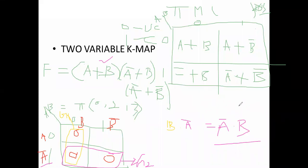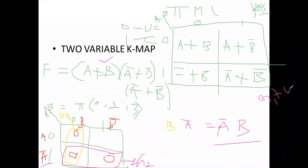Previously in sum of products, we were getting group 1 plus group 2. But here in product of sums, we are getting group 1 dot group 2. In the same way, if you are taking another term A plus B bar, the corresponding cell also has 0.